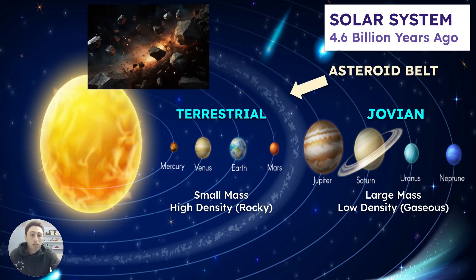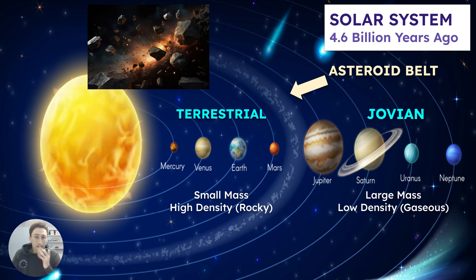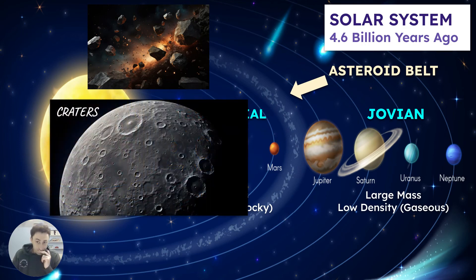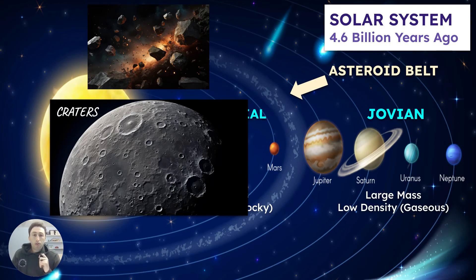In between the terrestrial and the Jovian planets, you have a belt called the asteroid belt. The asteroid belt is a belt of many rocks which orbit around the sun, located in between Mars and Jupiter. These asteroids sometimes collide into planets — for instance, our moon — and create holes called craters.